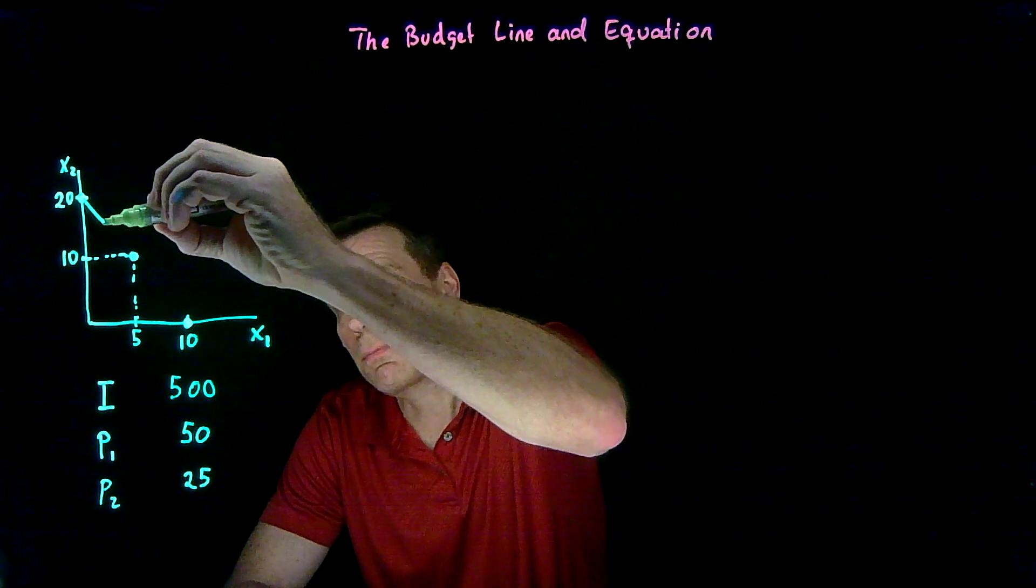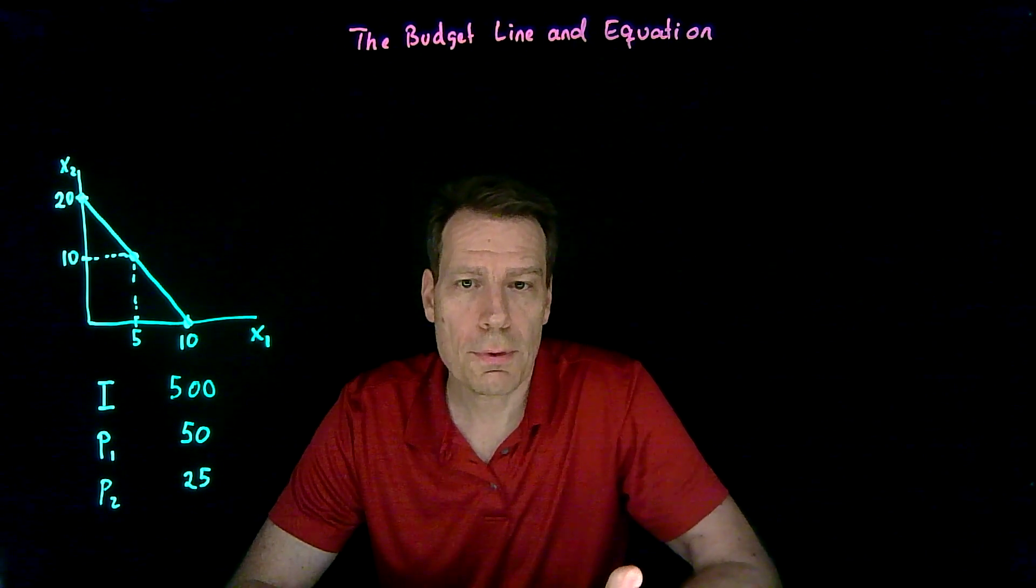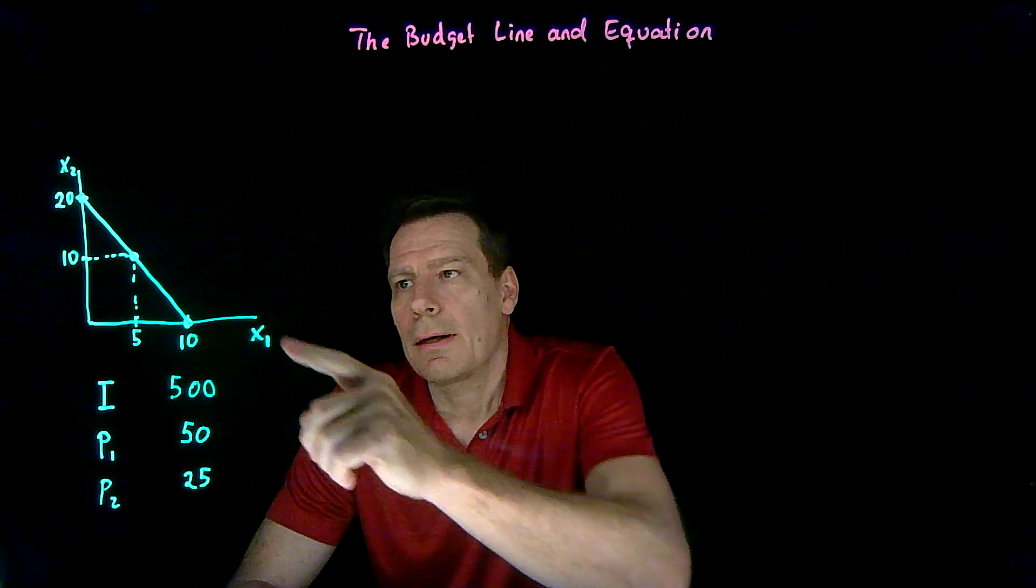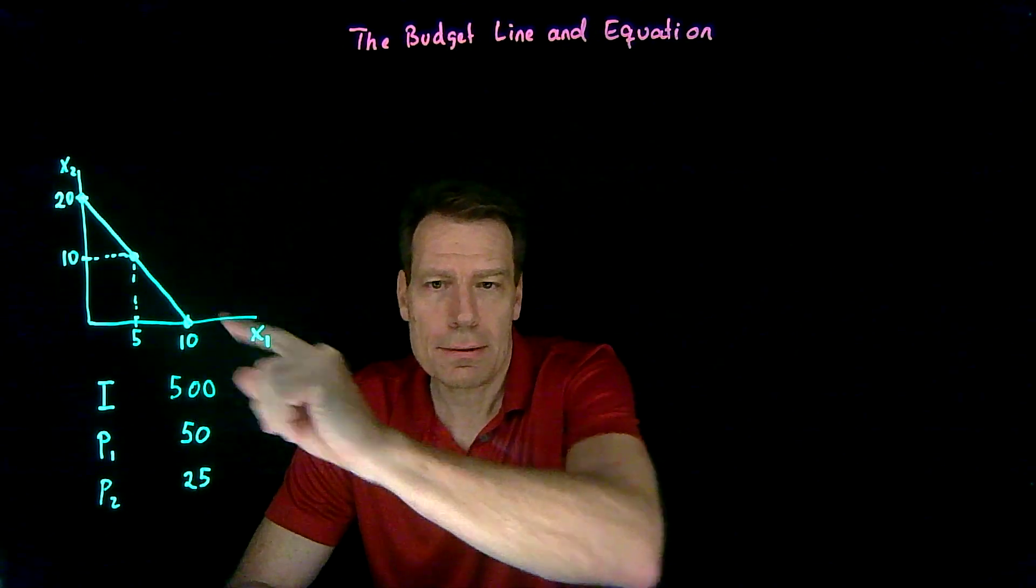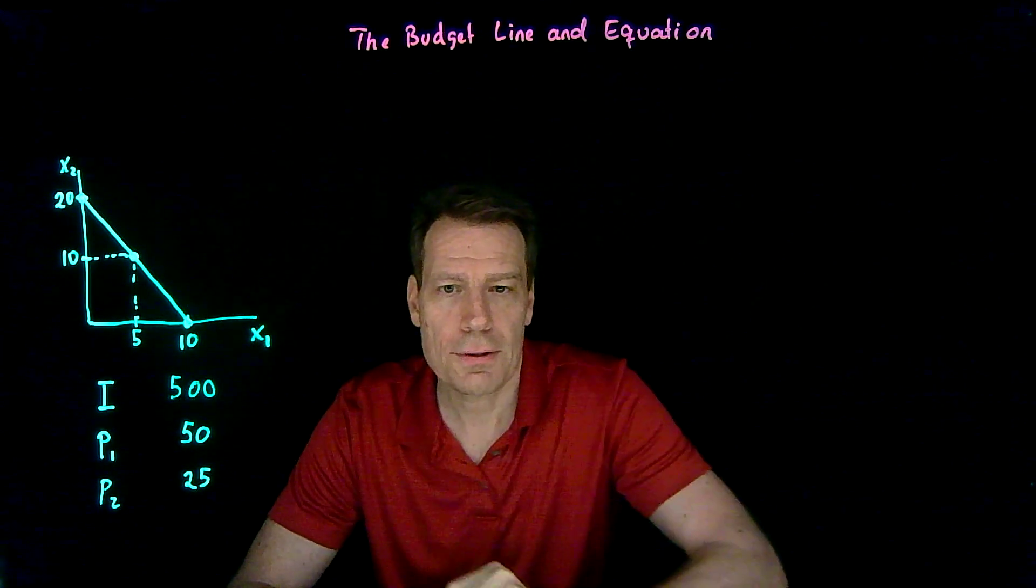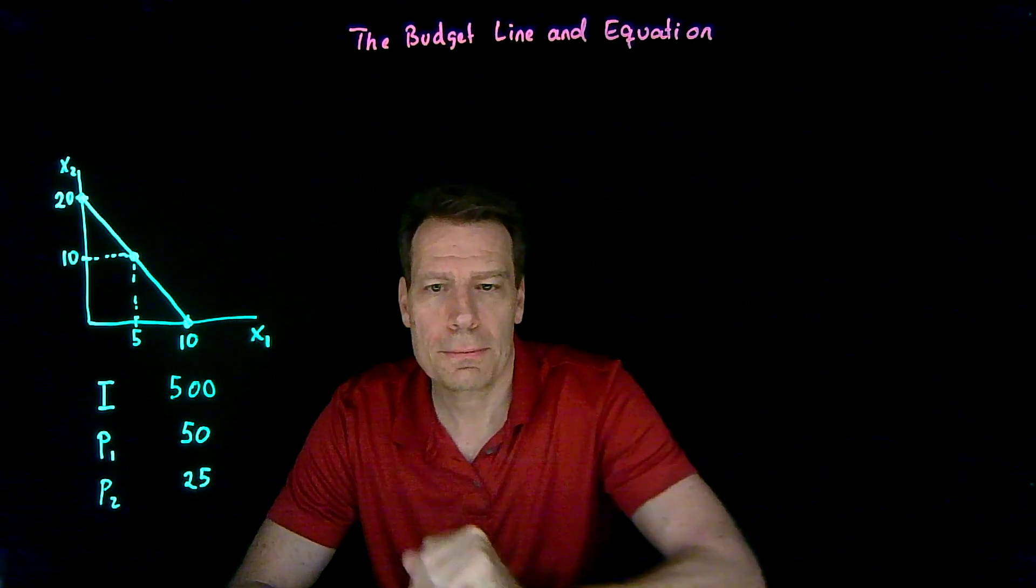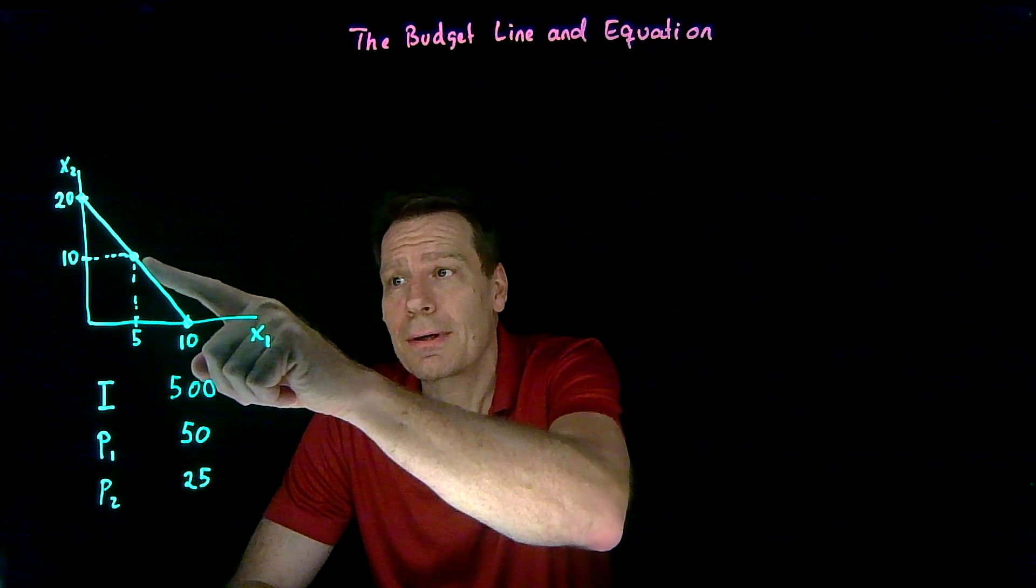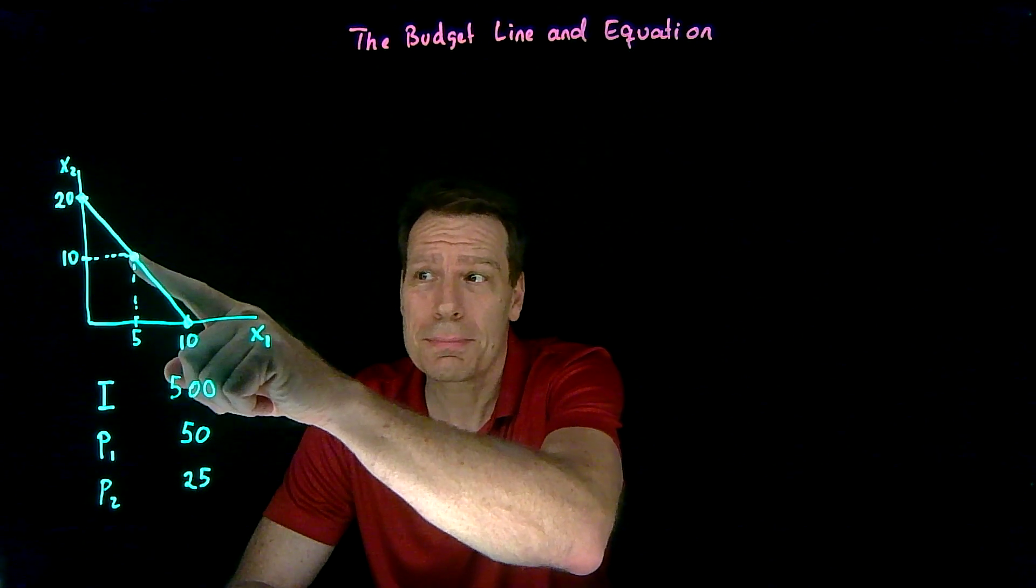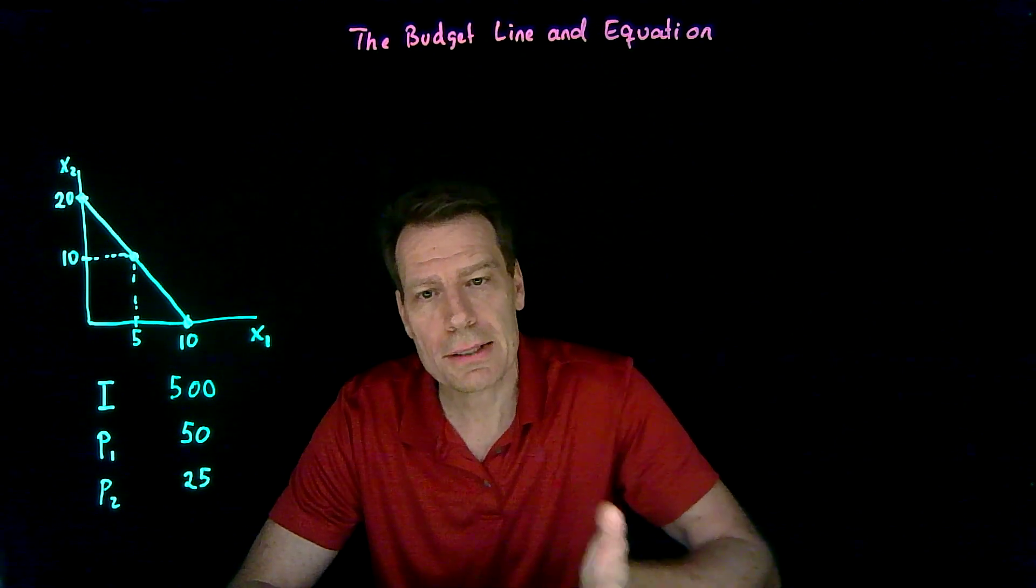So there's a whole series of bundles that you could afford to buy, where you spend all of your money. And that line is called the budget line. You could, of course, buy bundles that are inside this little triangle, because inside this little triangle, you're spending less than your $500. You'd have money left over. But you wouldn't be able to spend anything out here. You wouldn't be able to buy these bundles. Because if you're already sitting at this bundle, you're already spending all of your money. So buying more of either of the goods would not be possible, not be possible unless you buy less of the other good.